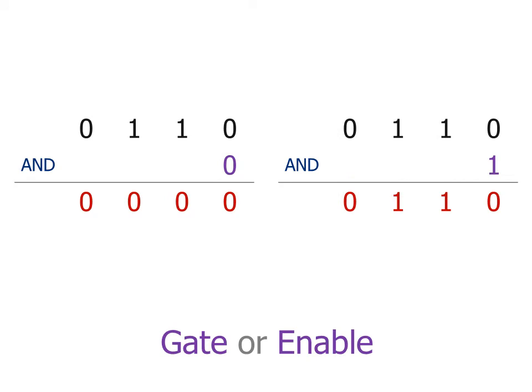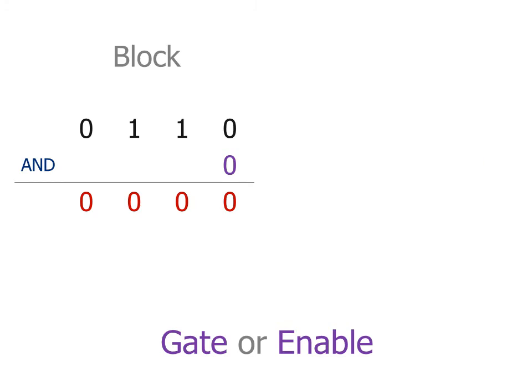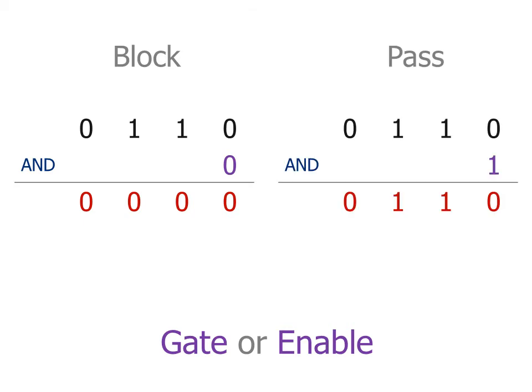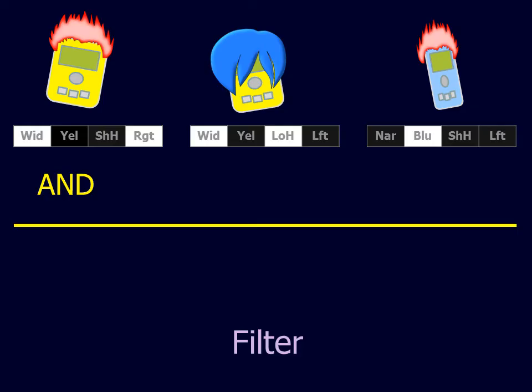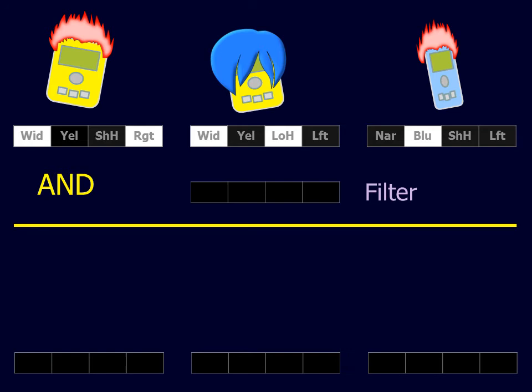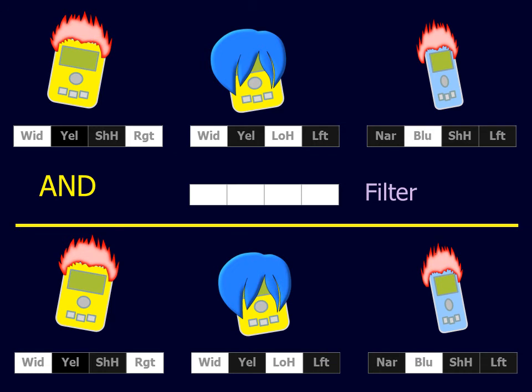With a single-bit co-operand, the AND operator acts as a gate or enable. The gate blocks the primary operand if the co-operand is 0, or passes it if the co-operand is 1. For data processing, this function is called a filter: a 0 blocks or filters out the original profile, while a 1 passes or filters through the original profile.